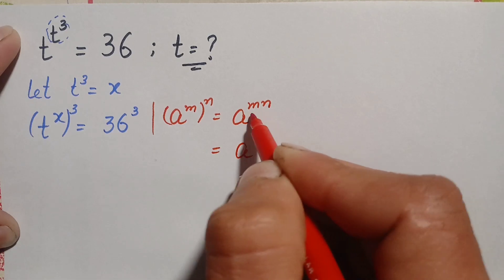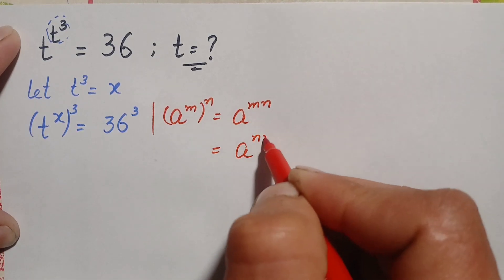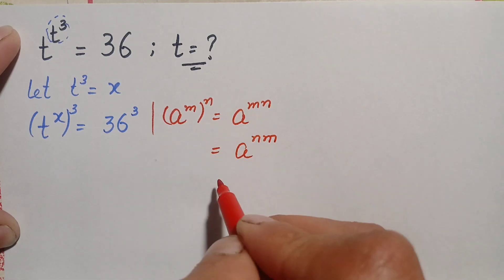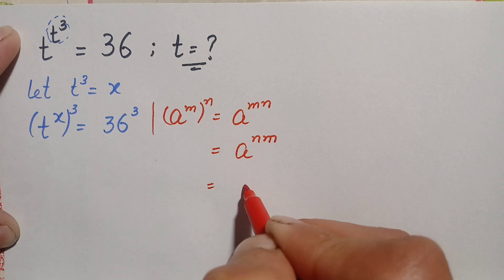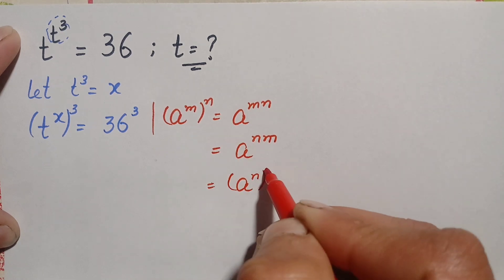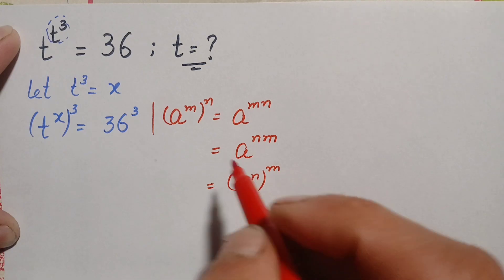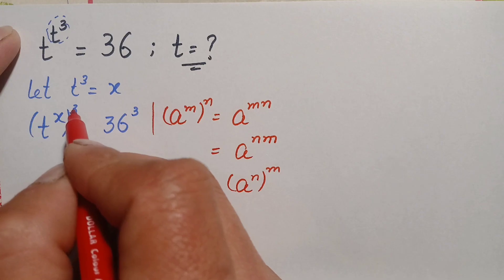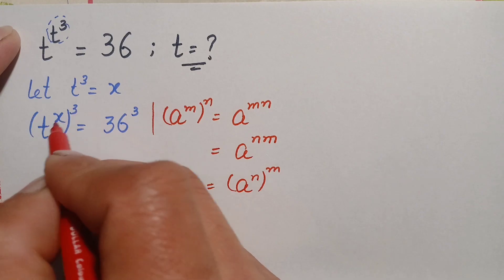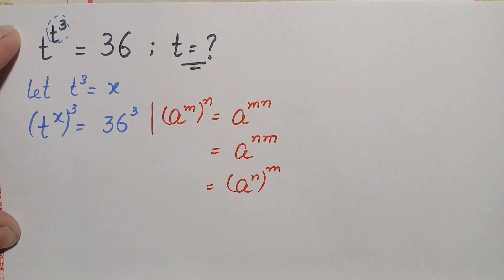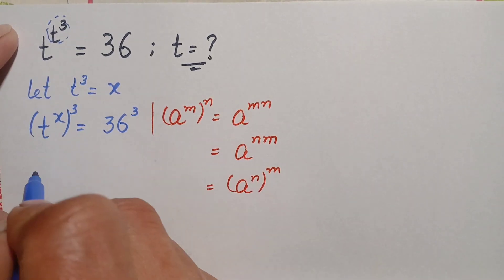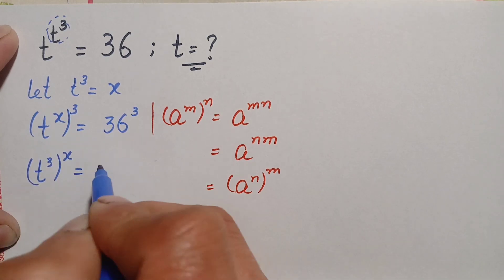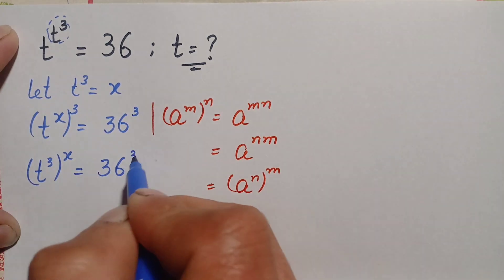We can rearrange this as a raised to power n times m, or equivalently a raised to power n, all raised to power m. Using this exponential identity, we interchange the position of the two powers — moving x outside and power 3 inside — so this becomes t cubed all raised to power x, equal to 36 raised to power 3.